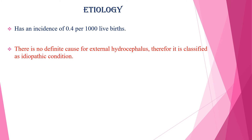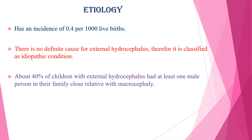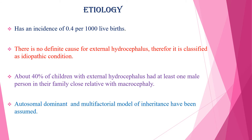Etiologically, there is no definite cause for external hydrocephalus or BESS, therefore it is classified as an idiopathic condition. About 40% of children with external hydrocephalus had at least one male person in their close family with macrocephaly. So autosomal dominant and a multifactorial model of inheritance have been assumed.